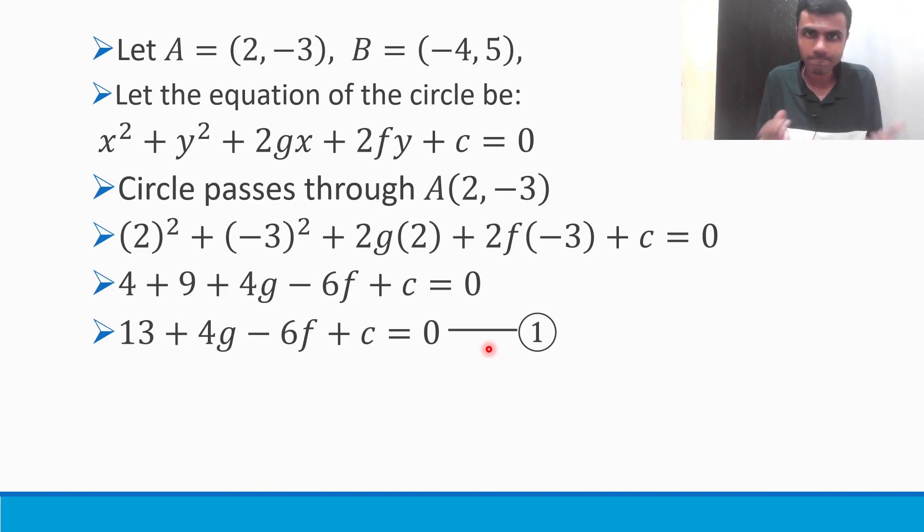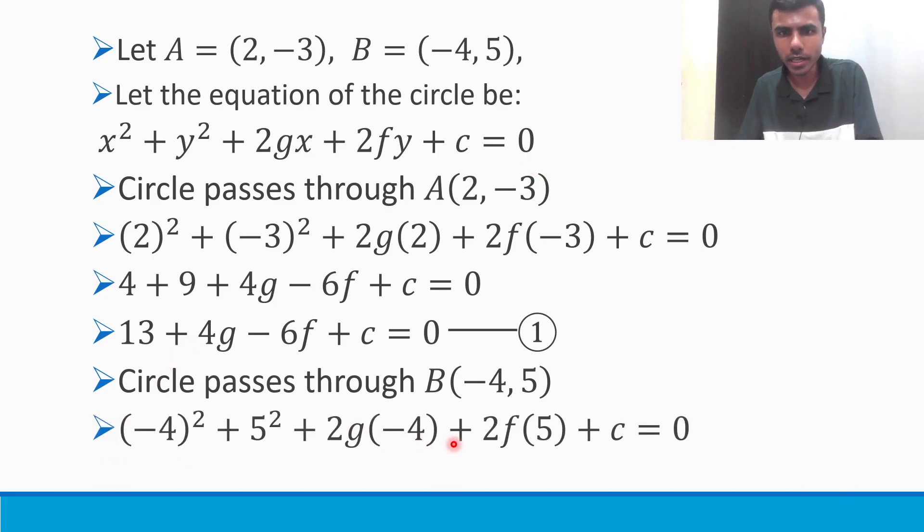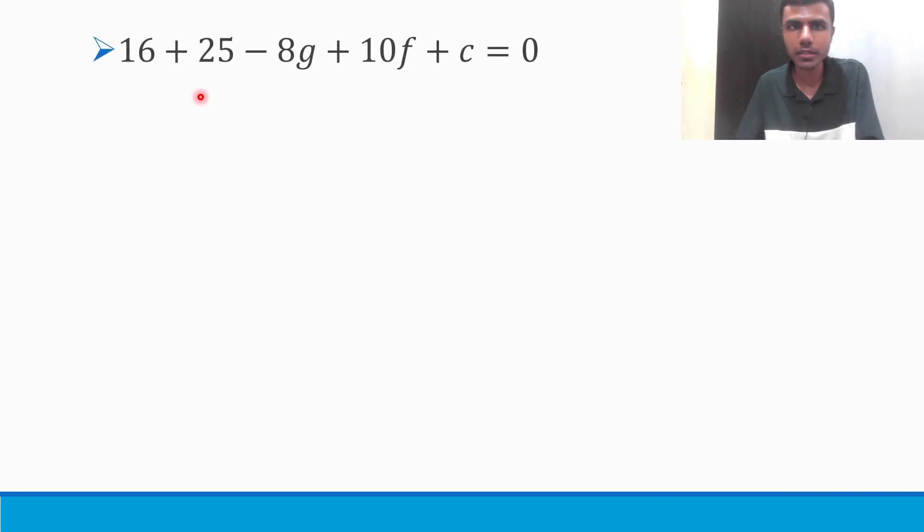Now the circle also passes through B. Same, in place of x and y in this equation, substitute -4 and 5. Basic simplification: -4 square is 16, 5 square is 25, and then -8g + 10f + c = 0. 16 plus 25 is 41. 41 - 8g + 10f + c = 0. This is my second equation.